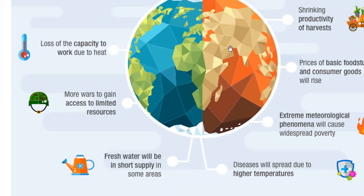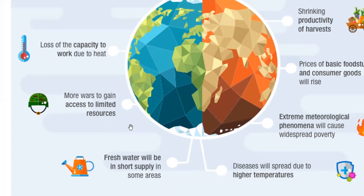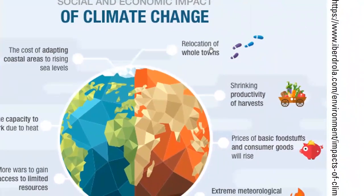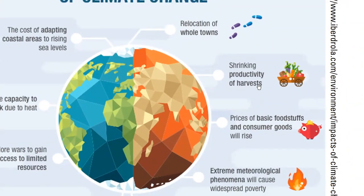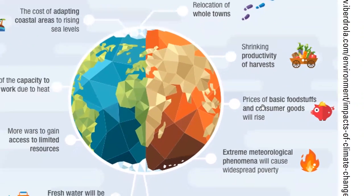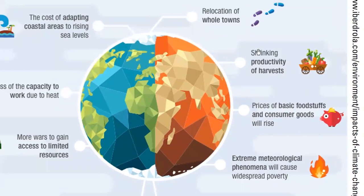Due to freshwater shortages, conflicts and wars can happen. Climate change will also result in the relocation of whole towns, especially those near rising sea levels, requiring people to move to areas of higher elevation. Additionally, there will be shrinking productivity of harvests, since agriculture depends heavily on climate conditions, causing prices of basic foodstuffs and consumer goods to rise.